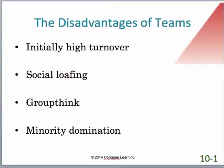The last disadvantage the book discusses is minority domination, which is usually a function of the personality traits of individual team members. We may have a team where there are one or two very strong personalities. If it's a group of five or six people, those one or two individuals — because they are so forceful or overzealous, or because they're paired with quieter people who don't want conflict — end up dominating the team's decision-making.